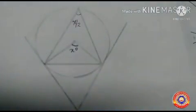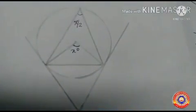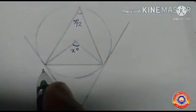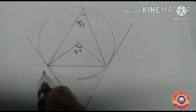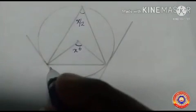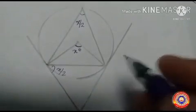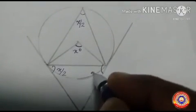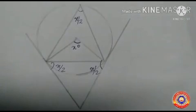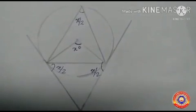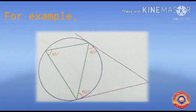The angle here is x/2 degrees. The angle between the chord and tangent is also equal to x/2. So these two angles are both equal to x/2. Is that clear? Good.